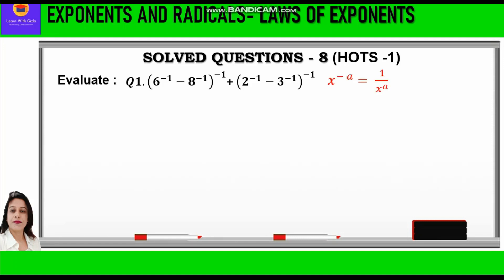We apply the law of negative exponent: x raised to power minus a is equal to 1 upon x raised to power a. That means we reciprocate the base and convert the negative into positive exponent. Accordingly, we write 1 upon 6 minus 1 upon 8, whole raised to power minus 1, plus 1 upon 2 minus 1 upon 3, whole raised to power minus 1.